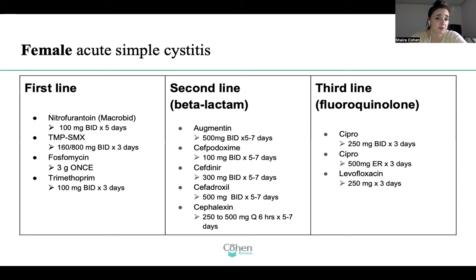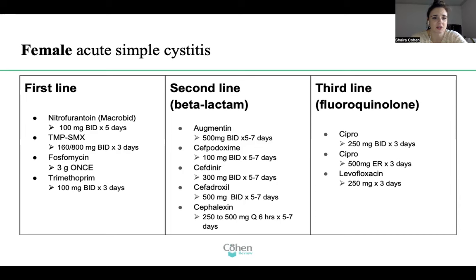Fosfomycin would be a good choice if you have a patient who is non-compliant — if for whatever reason you think the patient will not comply with the medication regimen and might stop halfway through, maybe an older patient with some cognition issues. Fosfomycin once, done — this is a good choice. Trimethoprim is another first-line option, 100 mg twice daily times three days.